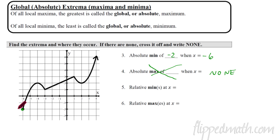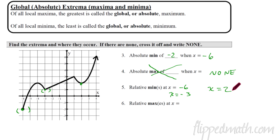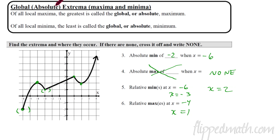Just because a point is an absolute min doesn't mean it's not also a relative min — it's still the least value in that local area. So there is a relative min at x equals negative six, another at x equals negative three, and another at x equals two. For relative maxima, there's one at x equals negative four, and one at x equals one. We don't include one on the right because the function goes to infinity there. That defines our global versus local extrema.